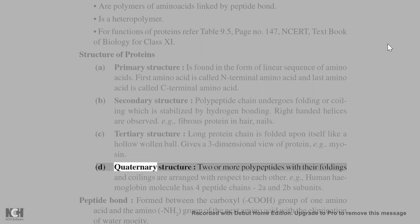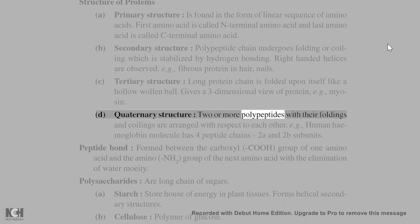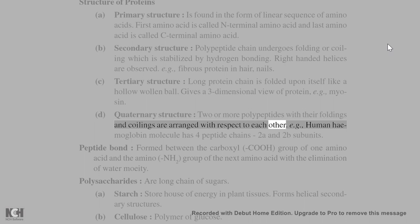Quaternary structure: two or more polypeptides with their foldings and coilings are arranged with respect to each other. E.g., human hemoglobin molecule has four peptide chains, two A and two B subunits.